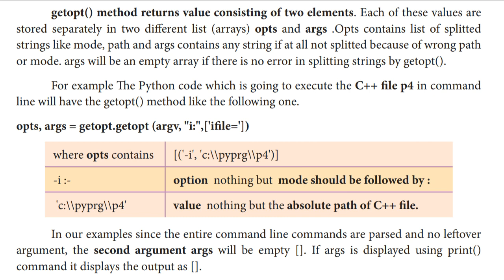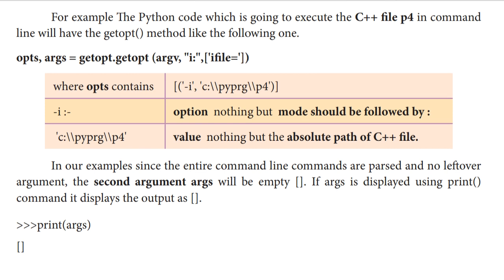So i file — that file contains the C++ program's path. i means that we are receiving the C++ file in input mode. That is why we mentioned i in front of the file. Then at the end of the file we have the equal to sign. So in opts, the list will have values: mode, then C++ program path stored. i means that is the option, nothing but mode, should be followed by colon. Next: C colon double slash PYPRG double slash P4 — that is the path of the C++ file.